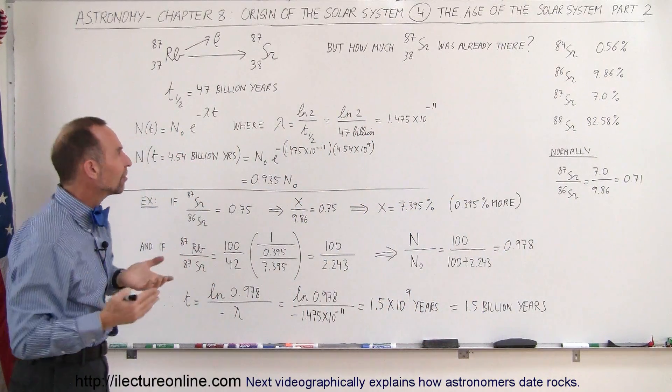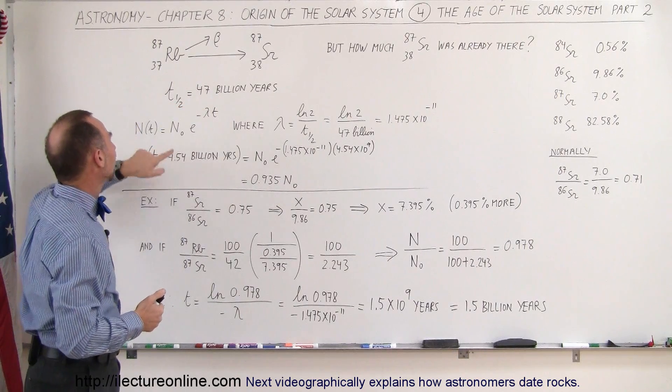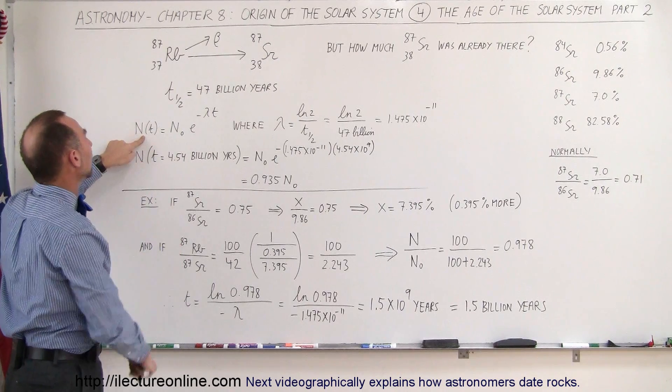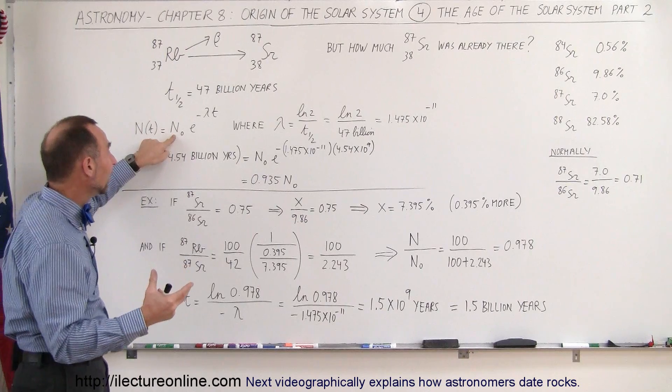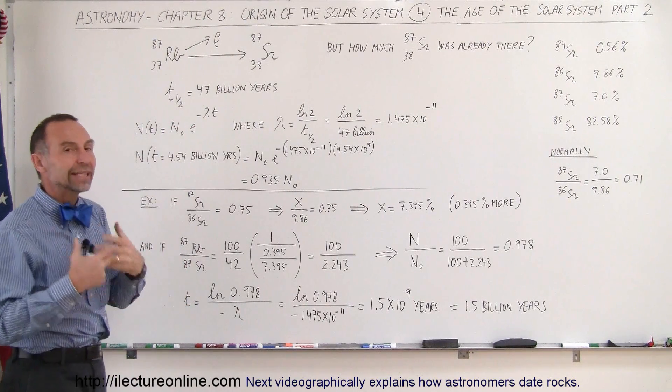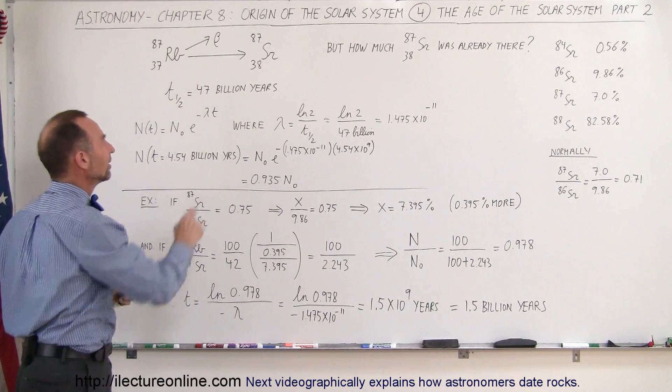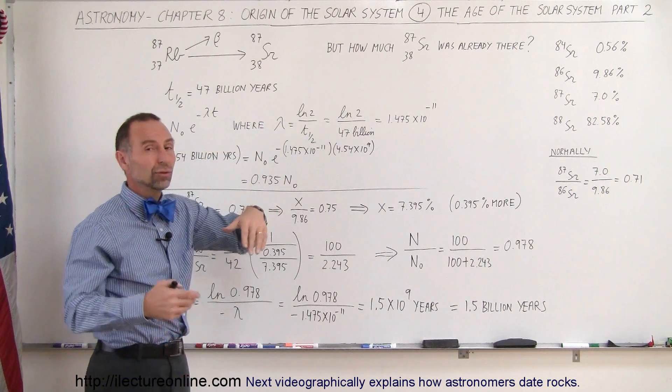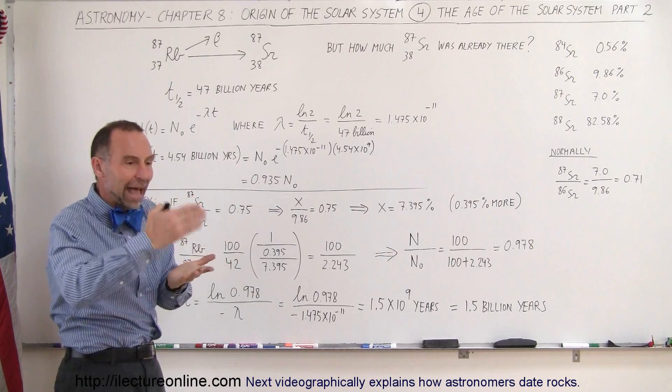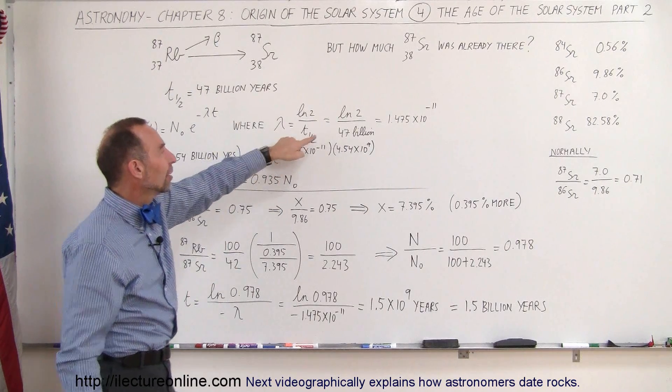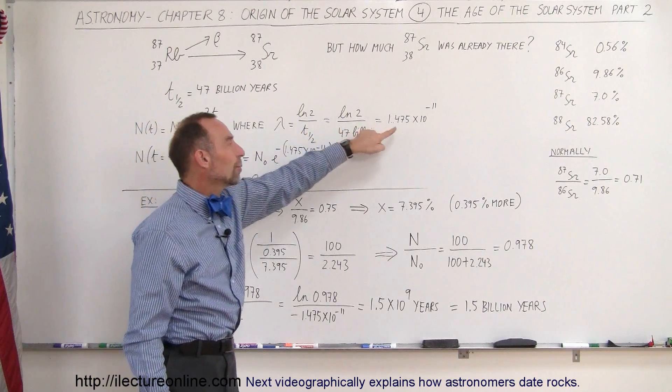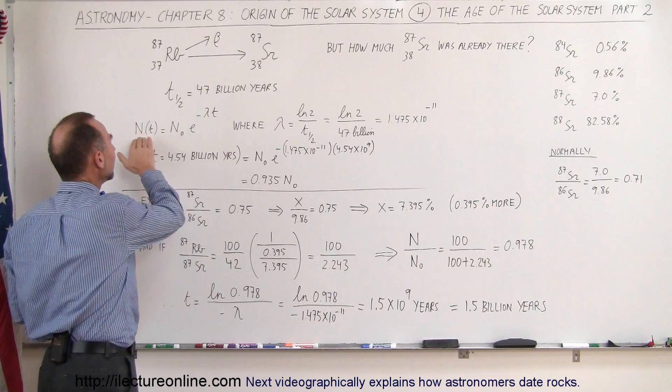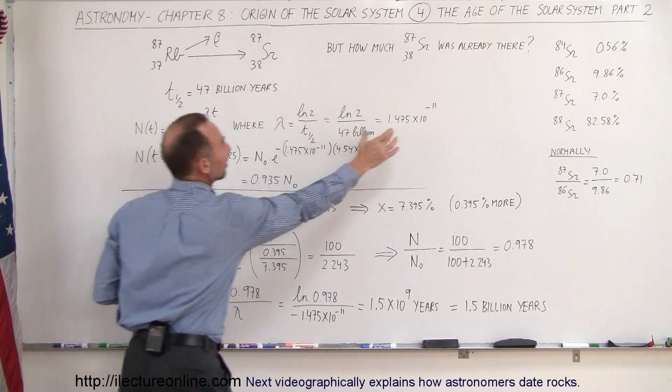So now we have to take the half-life, 47 billion years, and find the decay constant. So here we have an equation that tells us how much Rubidium we'll have left when we have a certain amount initially times e to the minus lambda times t. Lambda is what we call the decay constant, which depends on the half-life. t is simply time. So the decay constant can be found by taking the natural log of 2, which is because that's when half of it will be gone, divided by the half-life, so we have the natural log of 2 divided by 47 billion years, and we get this as a decay constant. So the equation can then be said that n is equal to n sub naught times e to the minus this number times t.